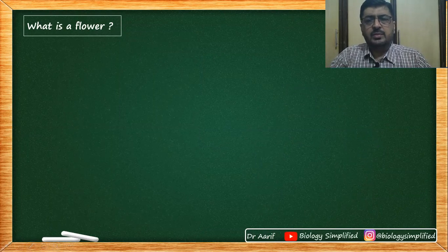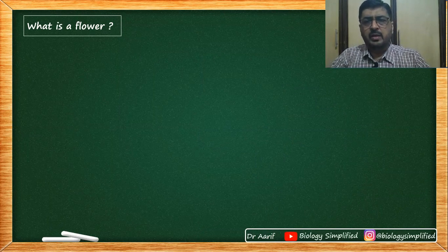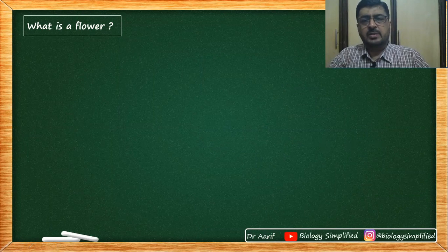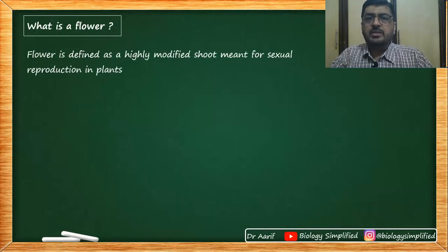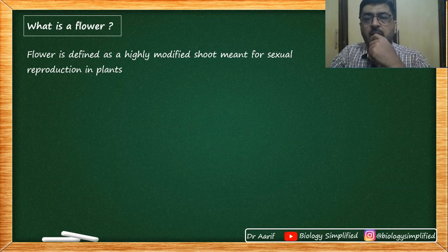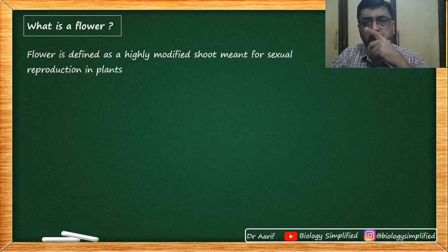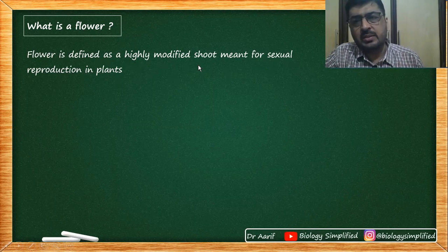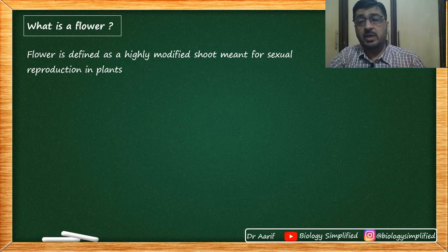Now, it's not as if we haven't done the structure of flower before — across all boards and syllabi, in elementary botany or biology, you have been studying what the structure of a flower is. So let's try to define the structure of flower and see what it is made up of. Flower is defined as a highly modified — and condensed — shoot meant for sexual reproduction in plants.